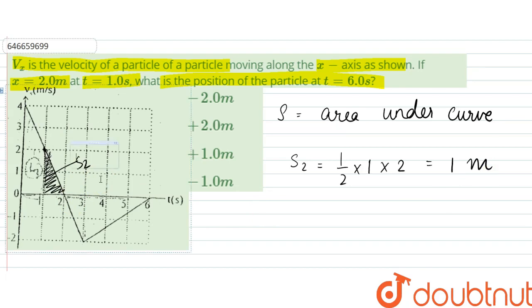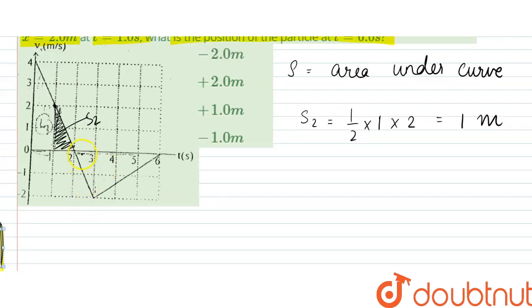And for this region, let this be s3. s3 is written as half into height would be 2 into the base (6 minus 2), that is 4. So that is 4 meters, but it is in negative. So the distance traveled would be equal to the total distance would be 1 minus 4, that is minus 3 meters.